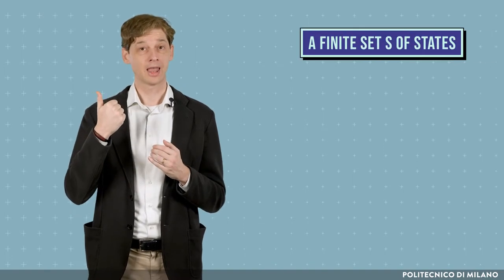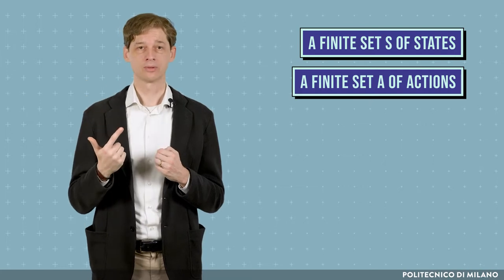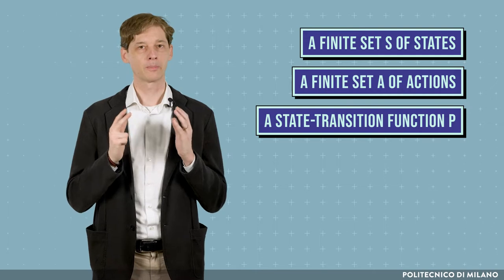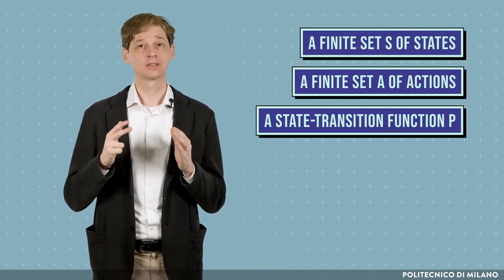A discrete-time finite MDP is composed of a finite set S of states, a finite set A of actions, and a state transition function P. In particular, P(s,a,s') is the probability of reaching state s' when we perform action a in state s.